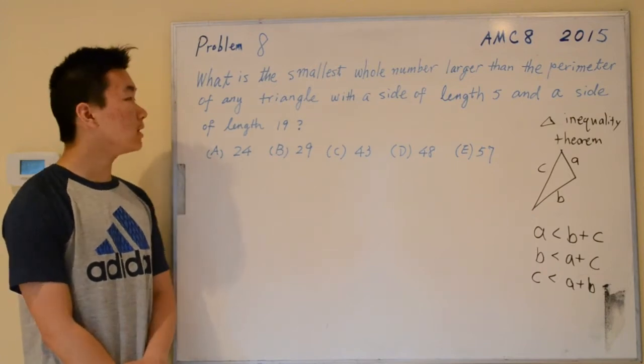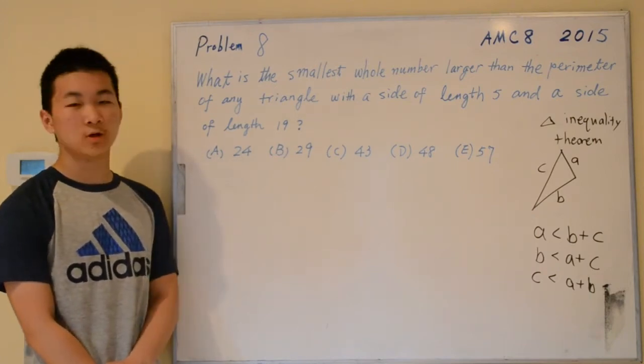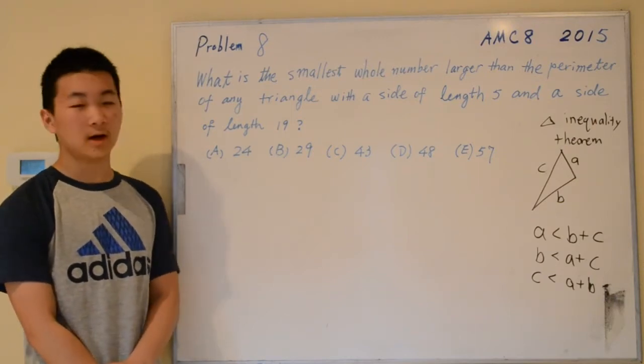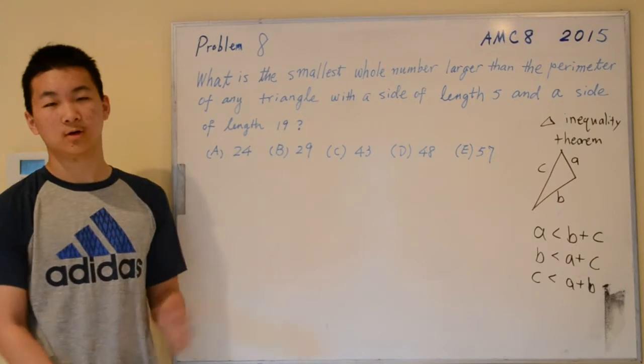The problem reads: what is the smallest whole number larger than the perimeter of any triangle with a side length of 5 and a side length of 19?